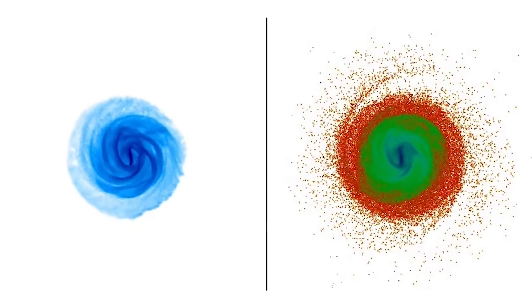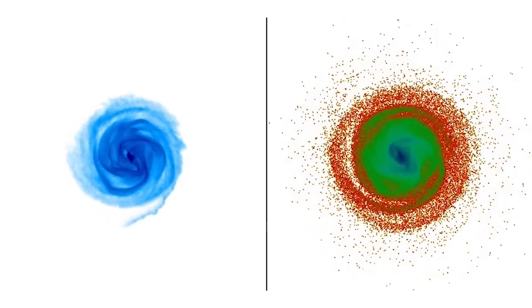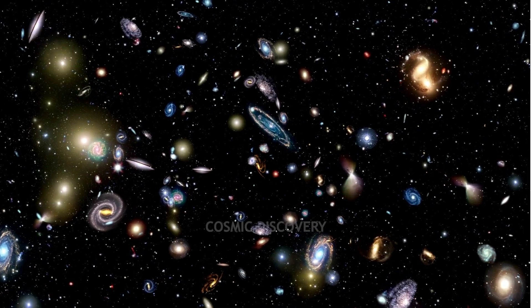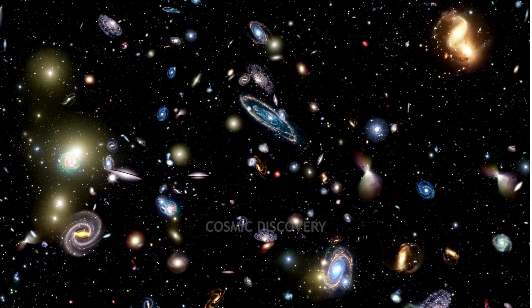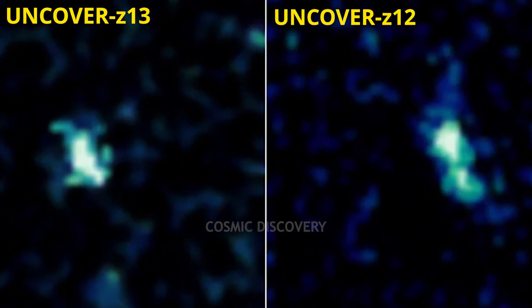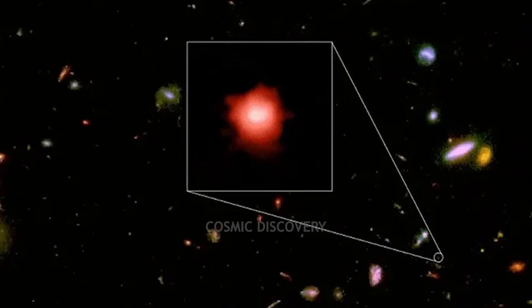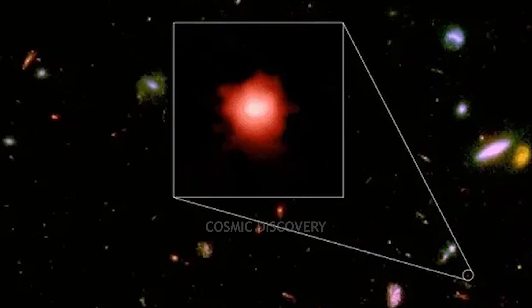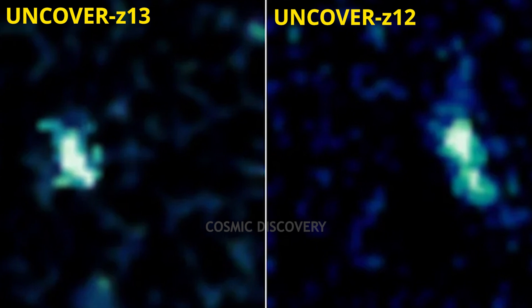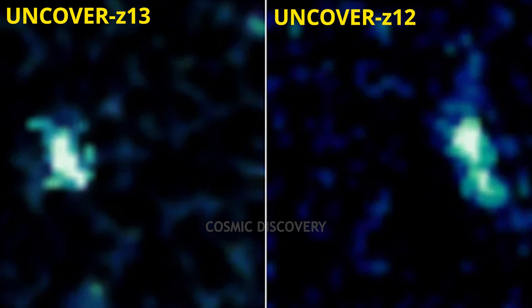What makes these galaxies truly stand out is their unique appearance. While other galaxies at comparable redshifts typically appear point-like, suggesting they are relatively small, the Uncover galaxies defy the norm with their structured shapes. Unlike their counterparts, which often appear as dots, one of these two has an elongated form, resembling a peanut, while the other takes on the appearance of a fluffy ball.